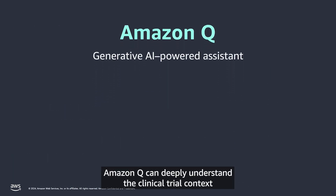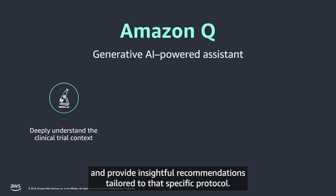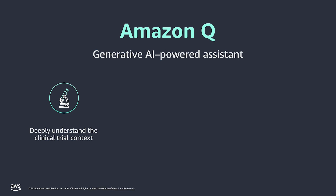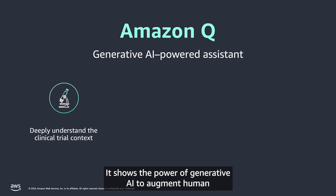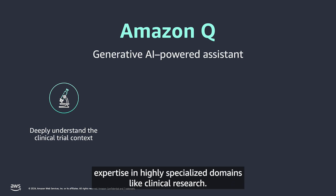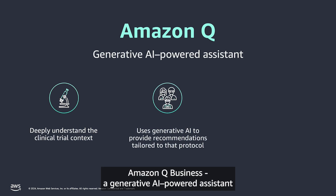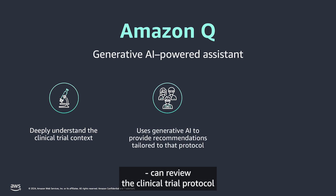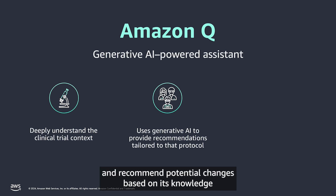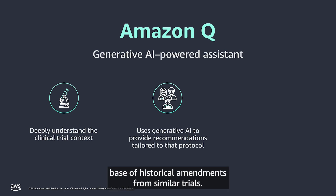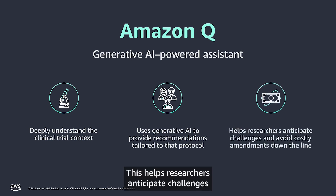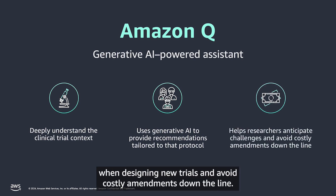Amazon Q can deeply understand the clinical trial context and provide insightful recommendations tailored to that specific protocol. It shows the power of generative AI to augment human expertise in highly specialized domains like clinical research. Amazon Q Business, a generative AI-powered assistant, can review the clinical trial protocol and recommend potential changes based on its knowledge base of historical amendments from similar trials. This helps researchers anticipate challenges when designing new trials and avoid costly amendments down the line.